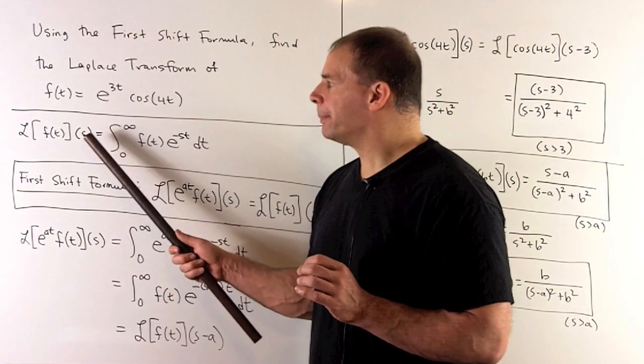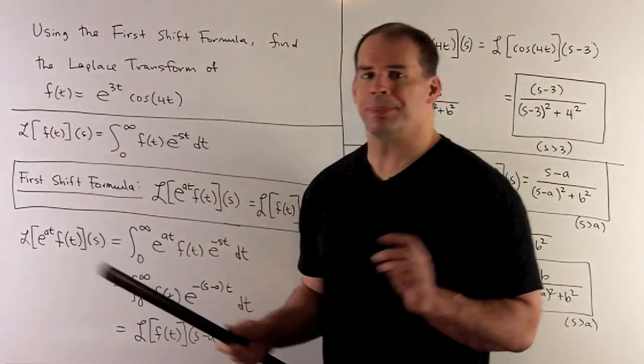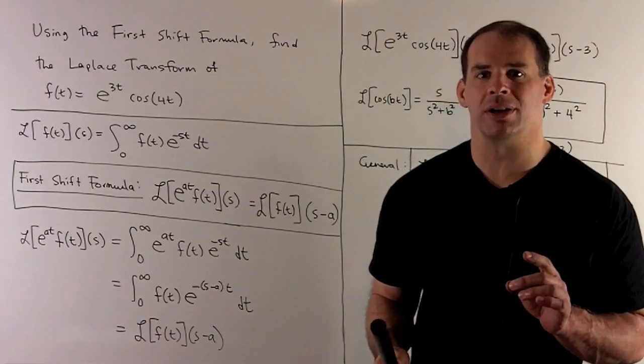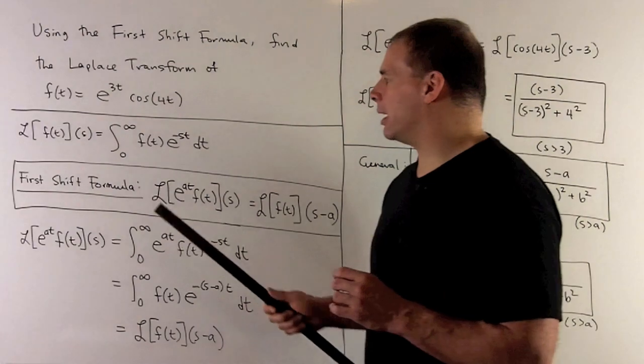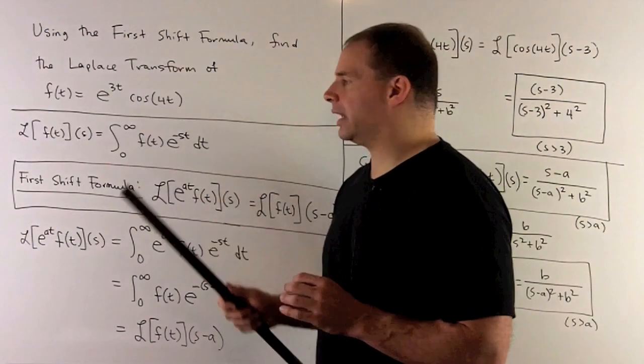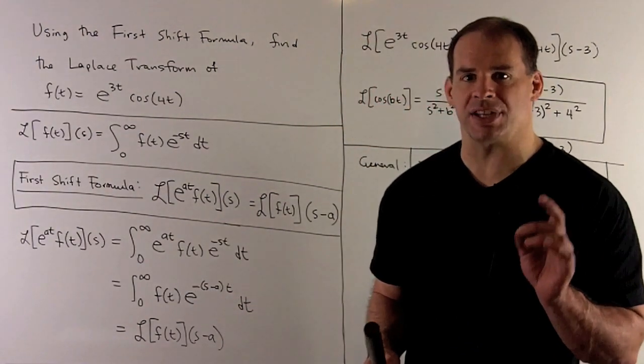The Laplace transform takes a function f(t) and returns another function with its variable in s. We define it as the improper integral from 0 to infinity of f(t) times e^(-st) dt.